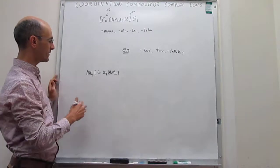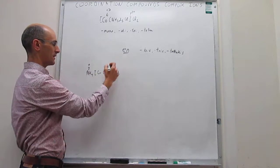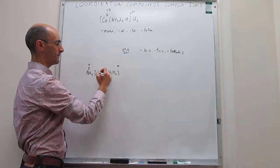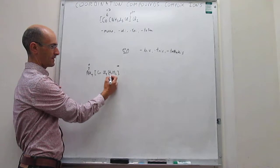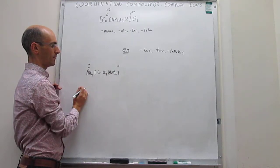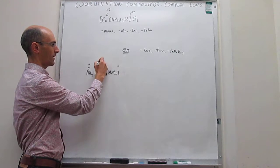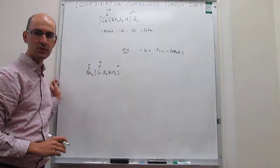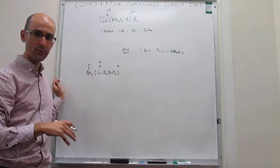In the other case, notice there is a plus 1 ion, which means the complex ion has to be negative 1. The aqua ligands are neutral and the chloro ligands are each minus 1, so the charge on the chromium atom has to be plus 3. You specify that oxidation number in Roman numerals between parentheses.